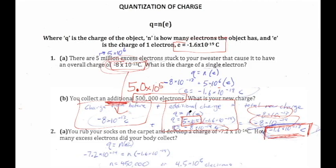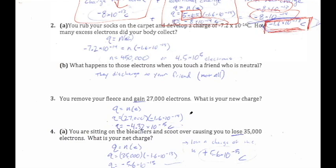Problem 2: rubbing socks on the carpet develops a charge of negative 7.2×10⁻¹⁴ coulombs. How many excess electrons did your body collect? Q is known, and the charge of one electron is negative 1.6×10⁻¹⁹. Some students get stuck wondering which number to divide by — take it one step at a time and ask how to isolate n.